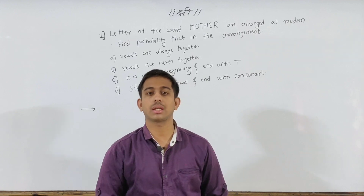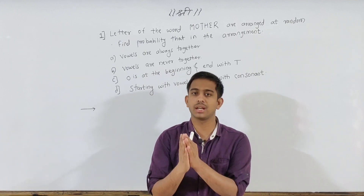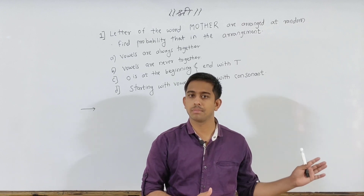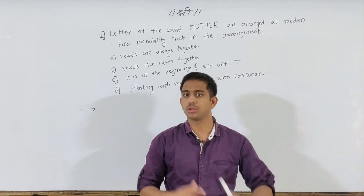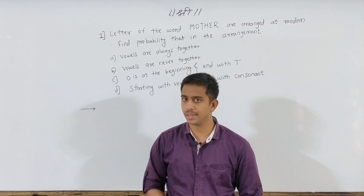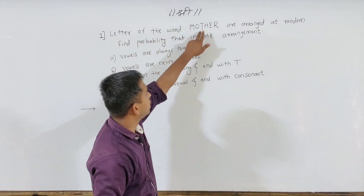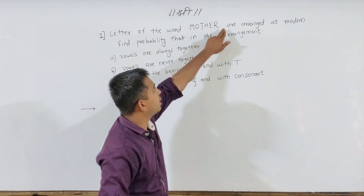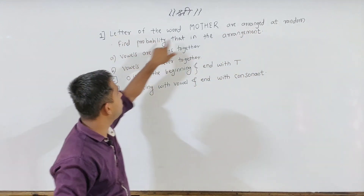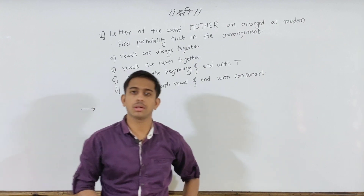Probability is related to permutation. How do we understand the arrangement? The probability is complete, the permutation is complete. Later, the letters of the word MOTHER are arranged at random. Find the probability of a given arrangement. I think that this is a permutation problem.